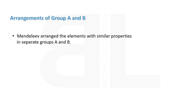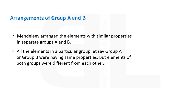Mendeleev arranged the elements with similar properties in separate groups — group A and group B. All the elements in a particular group, let's say group A or group B, were having the same properties. But elements of both groups were different from each other.